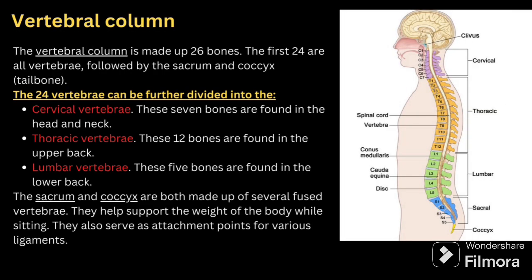Next comes the vertebral column, which is made up of 26 bones. The first 24 are vertebrae, followed by the sacrum and the coccyx — the tailbone. The 24 vertebrae are further divided into: cervical vertebrae — seven bones found in the head and neck; thoracic vertebrae — 12 bones found in the upper back; and lumbar vertebrae — five bones found in the lower back. The sacrum and coccyx are made up of fused vertebrae and help support the body's weight while sitting, also serving as attachment points for ligaments.